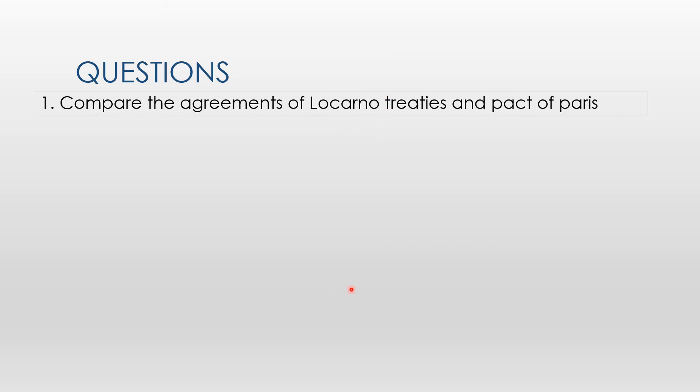Please write the following questions in your exercise book. If you don't have your exercise book, write on a piece of paper and paste it in later. Questions: Compare the agreements of the Locarno Treaties and the Pact of Paris. What were the agreements in the Locarno Treaties? What were the agreements of the Pact of Paris? Also describe the results of the Locarno Treaties and the Pact of Paris — were they positive or negative results? That's all for today, guys. Thank you for listening, bye.